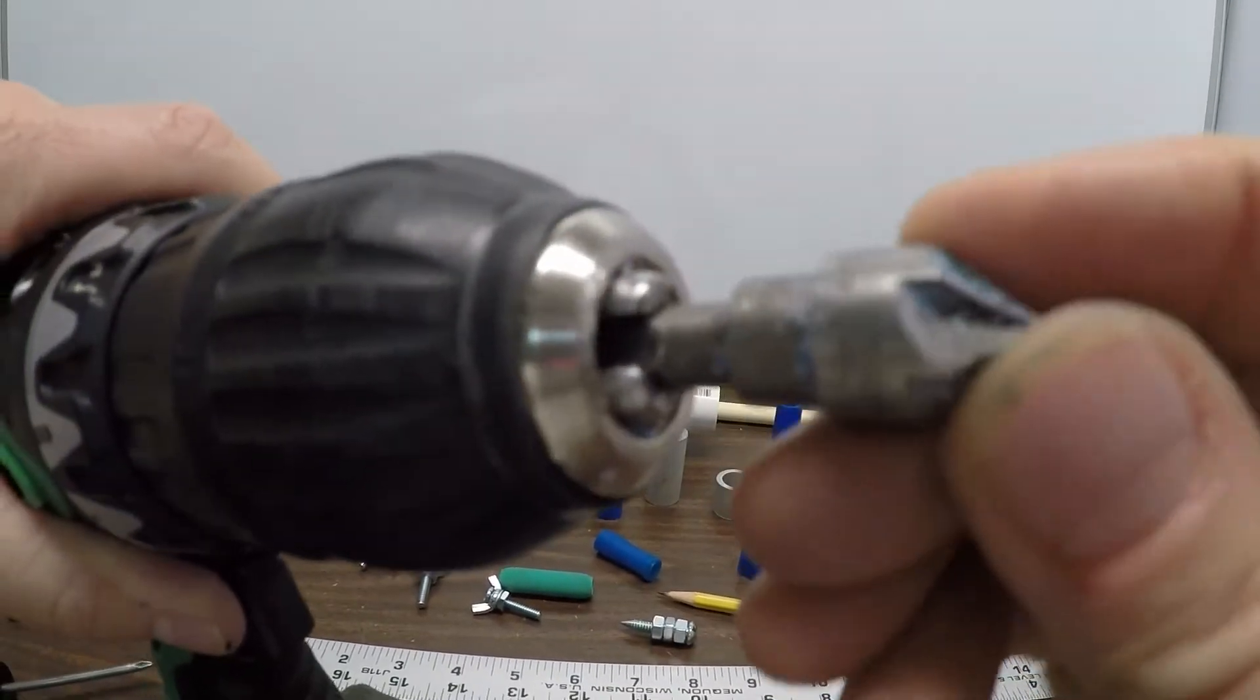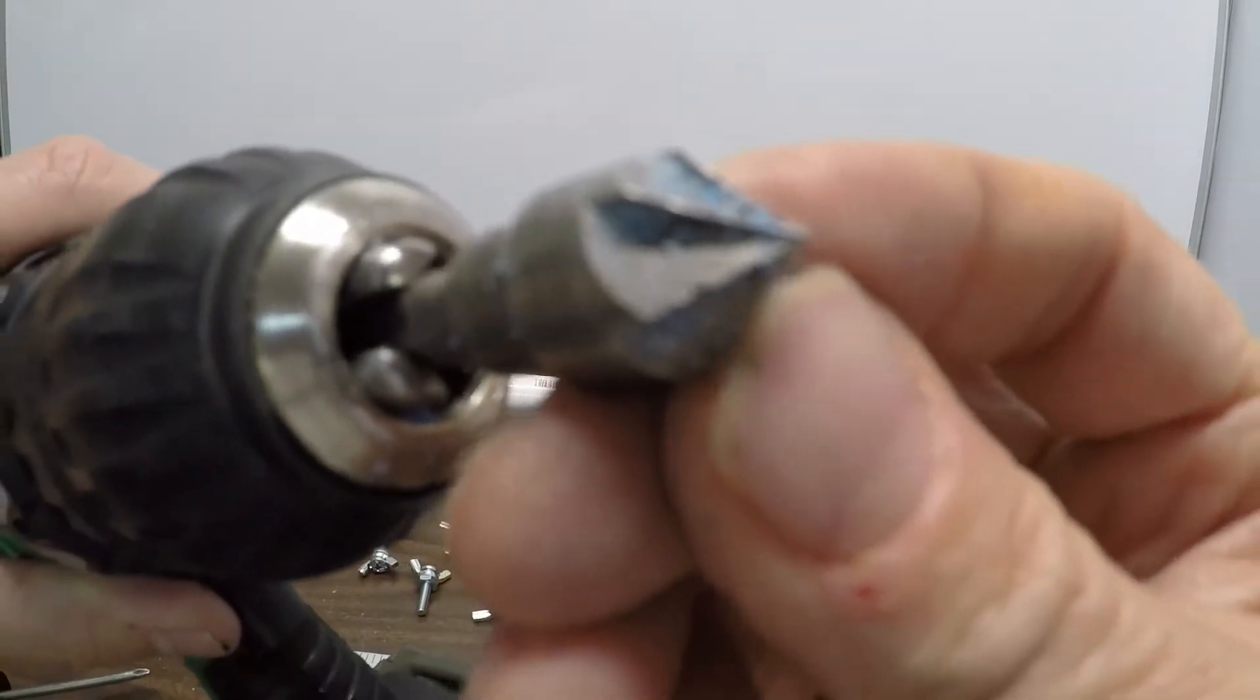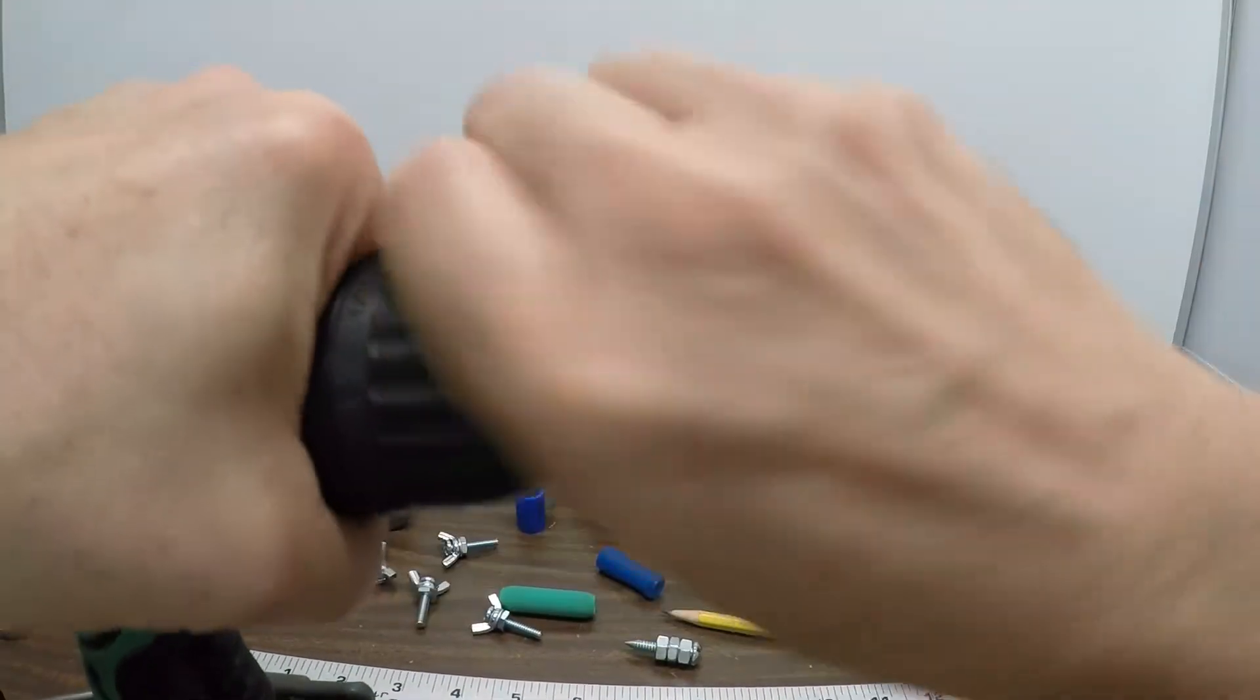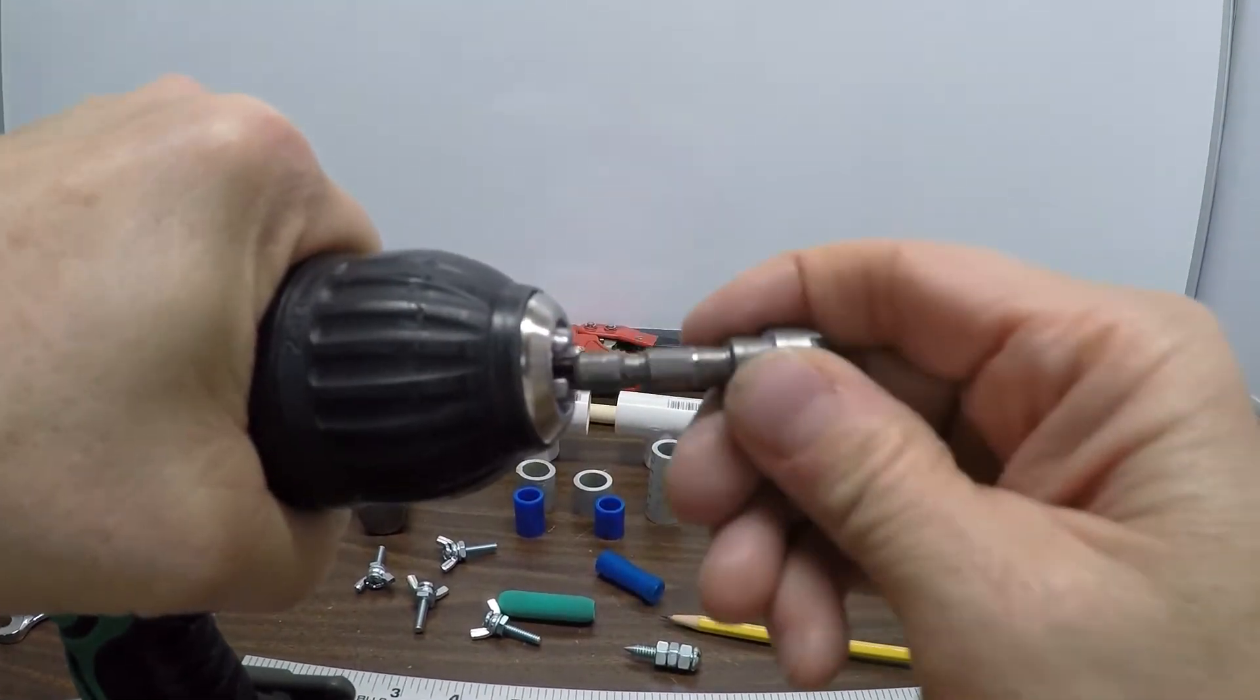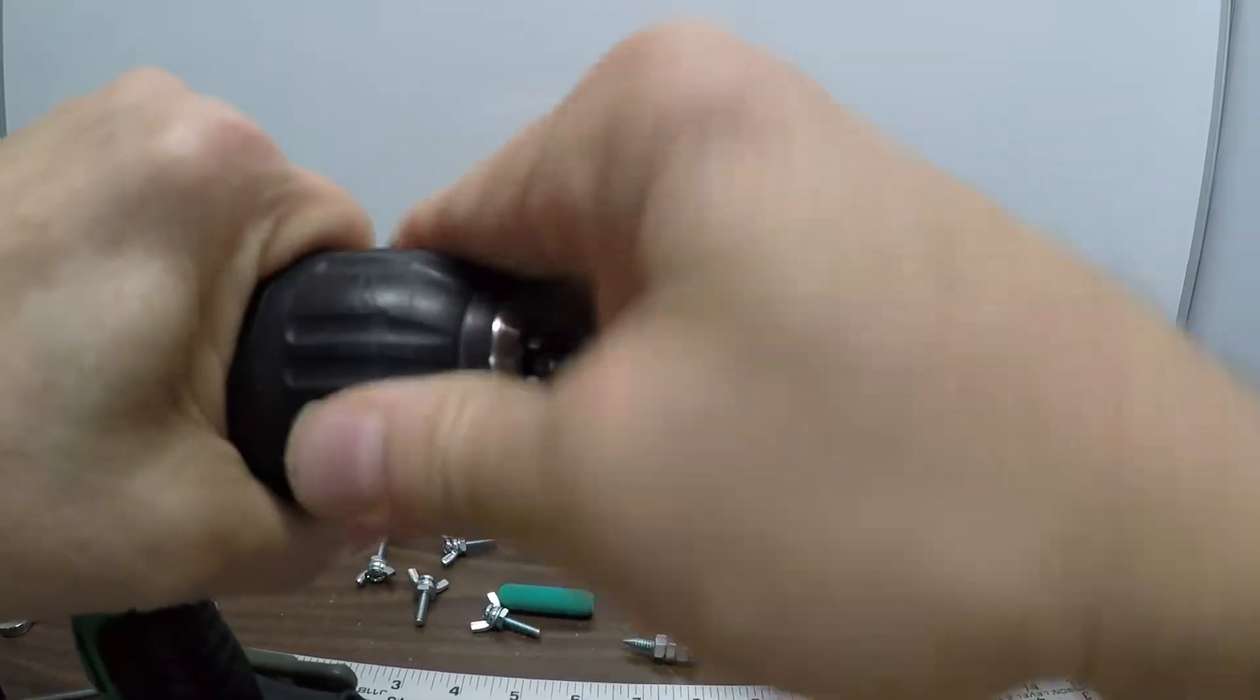I got a half-inch countersink from Home Depot. It was just like a hand version and I just put it in here in the drill and it works great.